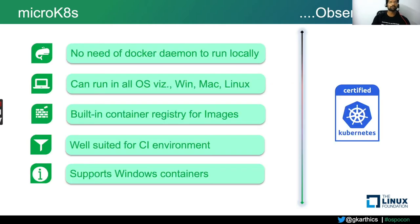The observations for MicroK8s: you don't need Docker to run it locally. You can run this on any operating system — Windows, Mac, or Linux — it is not OS-constrained. It also has a built-in image registry helpful for pushing and pulling local images into the cluster immediately. It's a single binary, easy for creating a single node cluster for CI/CD environments for testing or integration testing. MicroK8s is a CNCF conformant Kubernetes distribution. You can even create a Windows worker node and attach it to the cluster, and MicroK8s supports Windows containers.